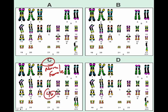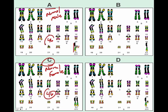Which one up here is the normal male? The normal male was A. I can tell because it has one long and one short — which is an X and a Y — and it has 46 chromosomes.